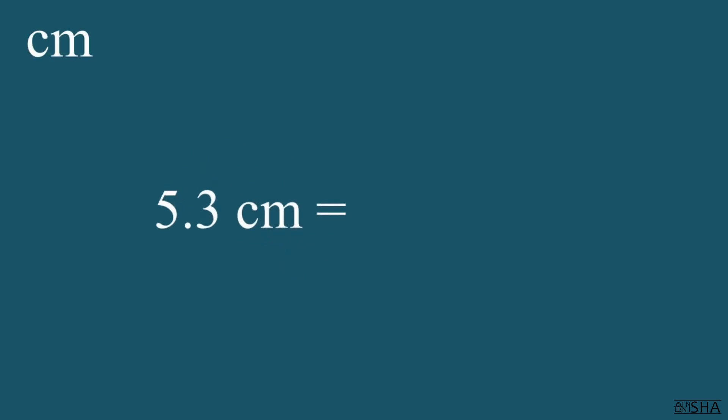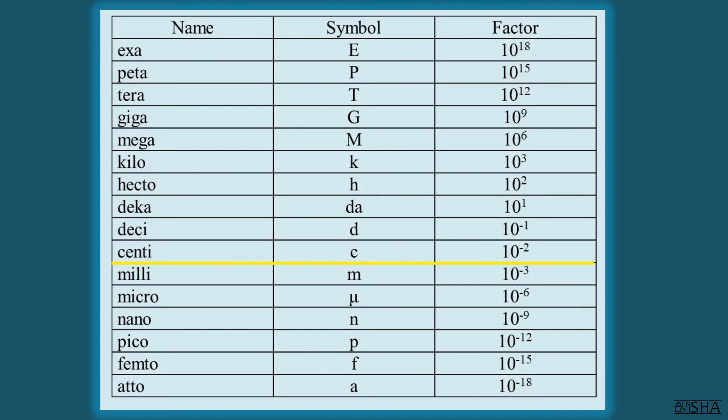Five point three centimeters convert to meters. We write down five point three and multiply it by the factor of the prefix centi, which is ten to the negative two power.